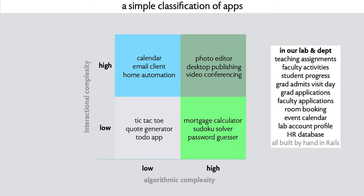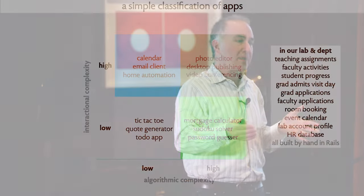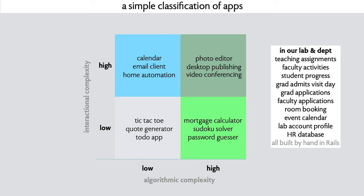Here's a way to think about the problem of building apps by thinking about them in two different dimensions. One dimension is what I call algorithmic complexity - basically how complicated the underlying algorithms are, whether you're doing real math, that kind of stuff. The other dimension is interactional complexity - the to and fro between different human beings, all the coordination, the complexity of behavior. If we look at this spectrum, we can place different types of apps on this grid. Something like a tic-tac-toe player, or a quote-of-the-day generator, or a to-do app - these are pretty simple in both dimensions. Things high in algorithmic complexity include calculating mortgage payments given principal, years, and interest rate. Sudoku solvers, password guessers, and so on.